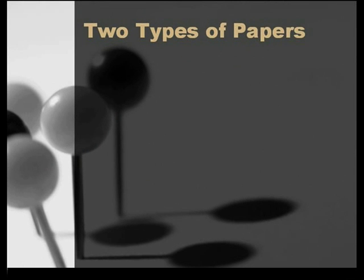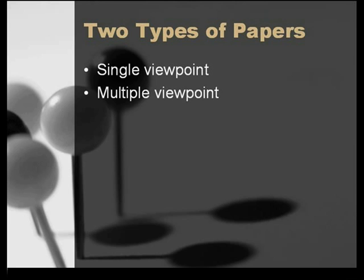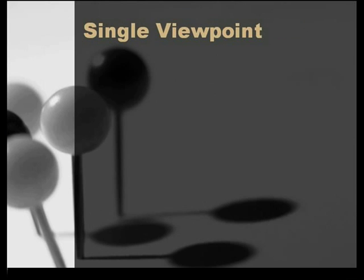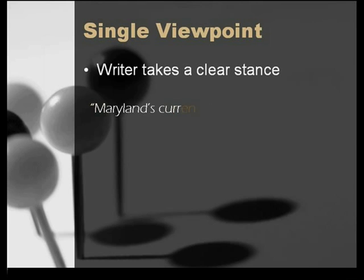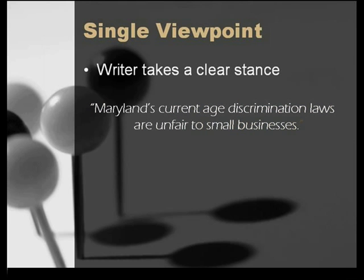There are two types of papers that you can write: single viewpoint or multiple viewpoint. In the single viewpoint paper, you, the writer, take a clear stance or position on the issue you've chosen. For example, consider this thesis: Maryland's current age discrimination laws are unfair to small businesses. Clearly, this writer has a definite point of view on the issue.